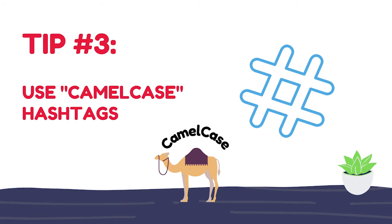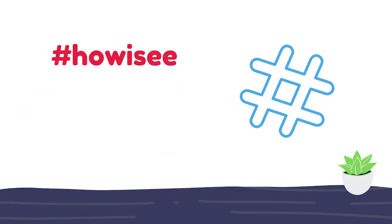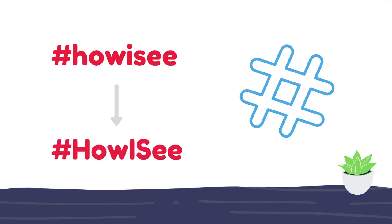Here's an example of this. Let's say you wanted to use the simple hashtag 'how I see.' With camel case, we'd write it more like this. The capital letter helps to signify to screen reader tools the start of a new word, and in general it just makes your hashtags easier for everyone to read.